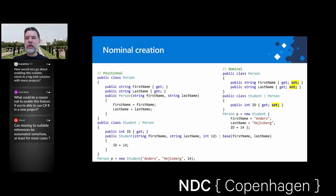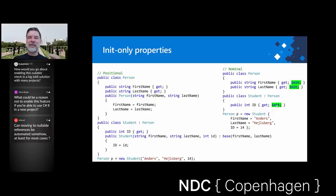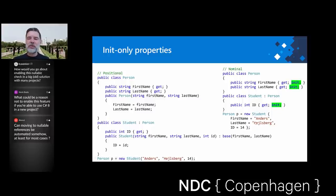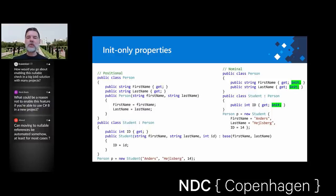One of the features we're looking at is what we're calling init-only properties. The idea is you can create a version of the property setter that only works during initialization time. We're creating essentially this concept of initialization time, which stretches beyond the actual constructor call and also includes the stuff in the object initializer. These properties are assignable until the object initializer stops and then no longer — so you're regaining immutability while being able to use nominal object creation.